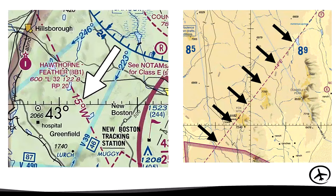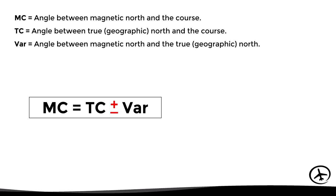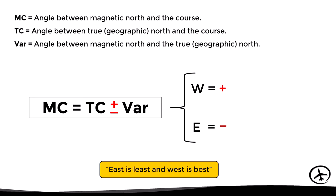In this video we won't see the exact procedure for correcting the planned course in detail, but here is a short overview. The magnetic course is obtained by adding or subtracting the magnetic variation from the planned true course. If we have a west variation we add, and if we have an east variation we subtract. We can remember this with the phrase 'east is least and west is best.' We will cover this in detail in the general navigation videos.